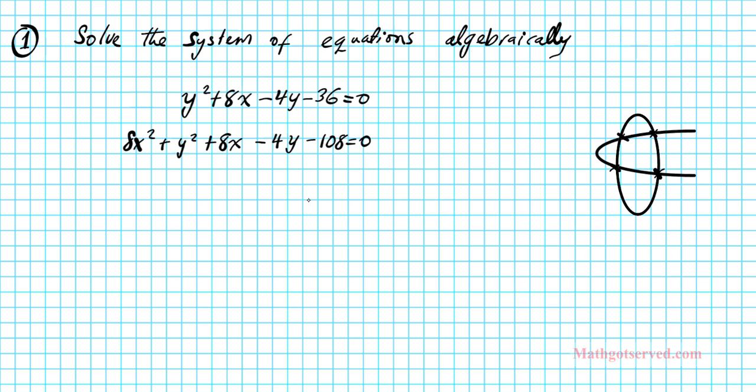So let's go ahead and solve this system. Remember, we can have no solution, two solutions or four solutions maximum. So how do we solve this system of conic equations? Well, we can solve this by elimination.